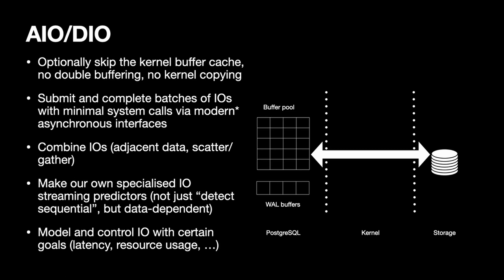With AIO and DirectIO, you skip the kernel caching piece of the stack. We also want to minimize the number of system calls, doing various kinds of combining and scatter-gather instead of accessing data eight kilobytes at a time. We want to make a whole bunch of specialized IO streaming predictors — not just obvious sequential reads, but data-dependent patterns — and take control of the total amount of IO, using goals for latency and resource usage limits.